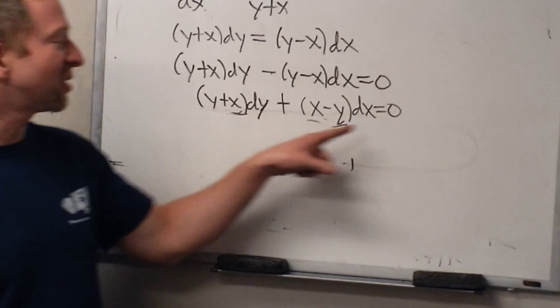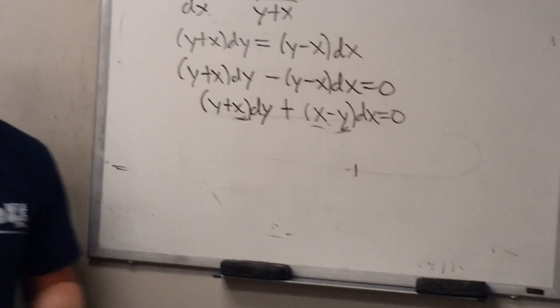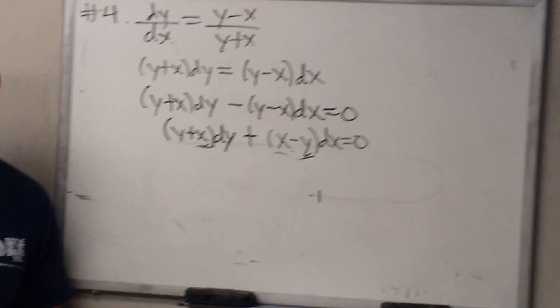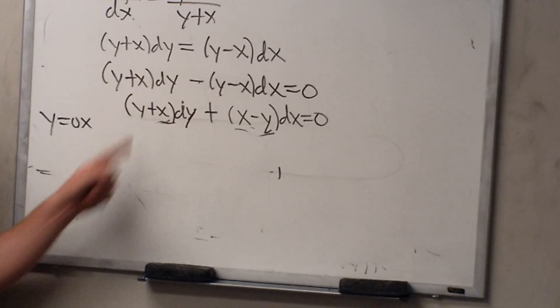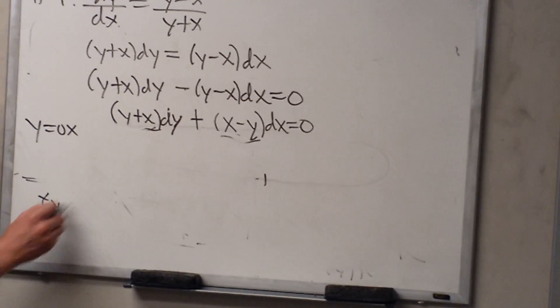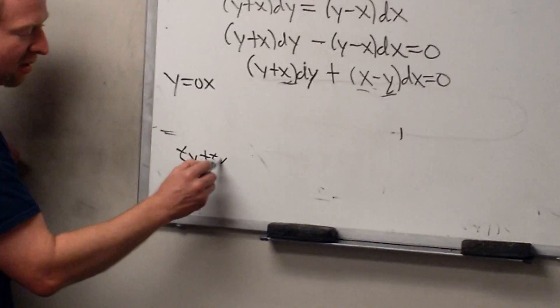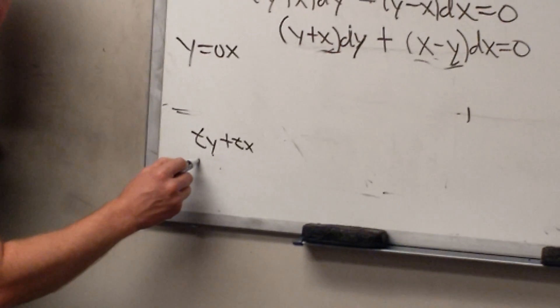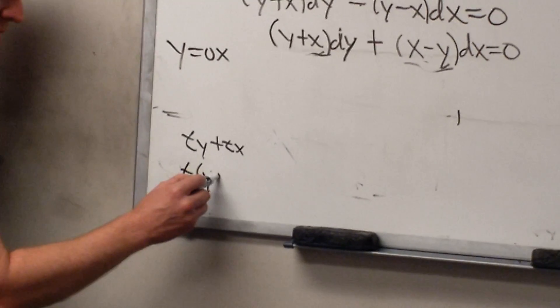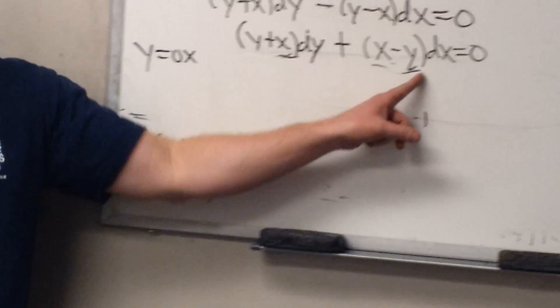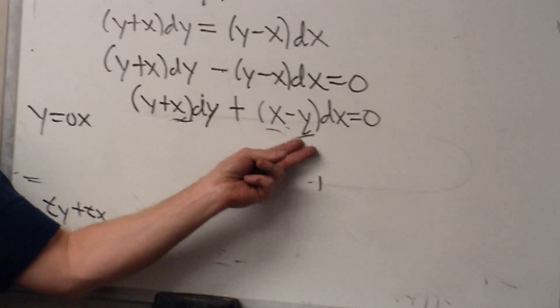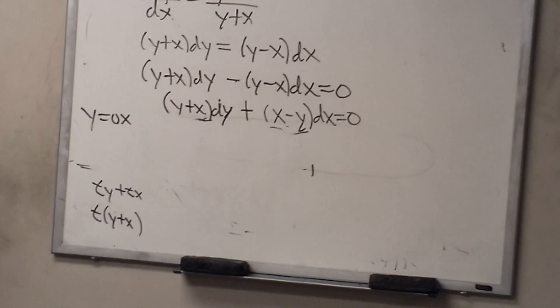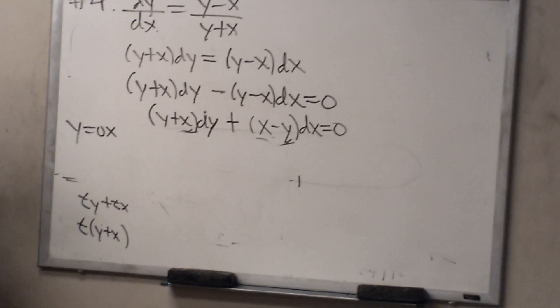So back to the homogeneous. We can let y equal ux or x equal vy — it doesn't really matter. Which one do you want? Y equals ux. By the way, you can tell it's homogeneous because all the powers are the same. If I plug in ty and tx, I can factor the t's out. And you can do the same thing here — if you can factor out t to the same power on both sides, it's going to be homogeneous. Does that make sense? Yeah.